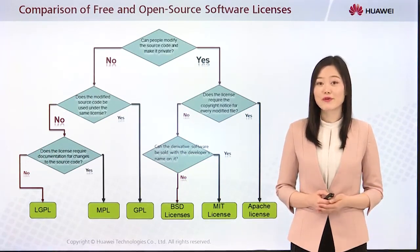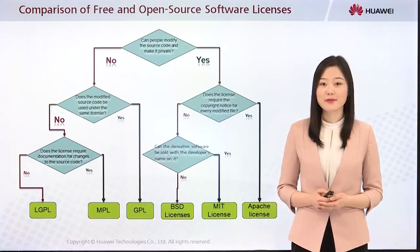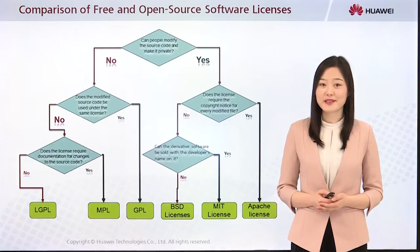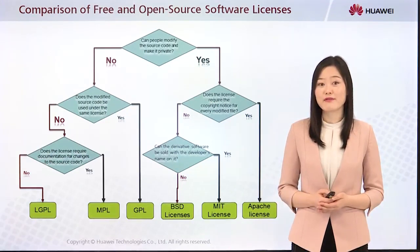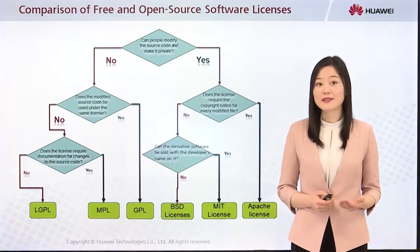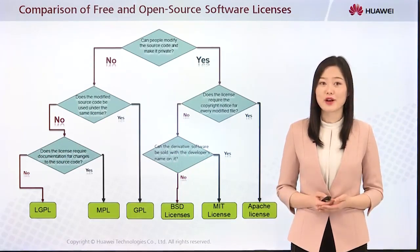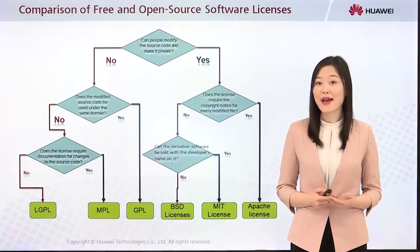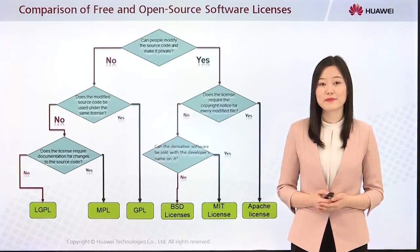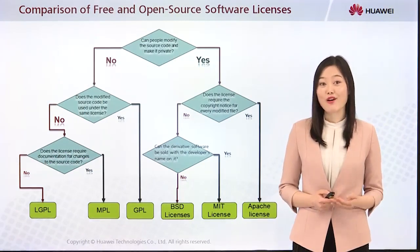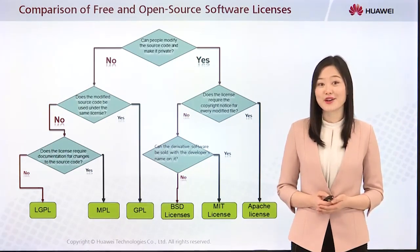The open source software is free, but the developers need money to continue developing the software. So where does the money come from? First, some third-party companies or individuals who approve of the software may provide financial support to the developer. Second, users who need technical support can pay the developer for this service. Third, developers' friends and families may provide financial support. Fourth, third-party companies may buy software from the developer.